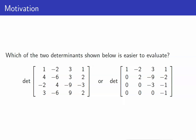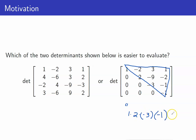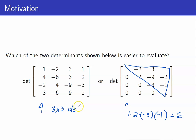Let us start with these two matrices. Which of these two determinants is easier to evaluate — the first one or the second one? From our previous lecture, we learned that the determinant of a triangular matrix can be computed simply by getting the product of the entries in the diagonal. What we have here is an upper triangular matrix, so this determinant is just equal to 1 times 2 times negative 3 times negative 1, which is equal to 6. However, for this other determinant, this is a 4 by 4 matrix with no zero entries, meaning we have to compute four cofactors — that is four 3 by 3 determinants — which would be very tedious.